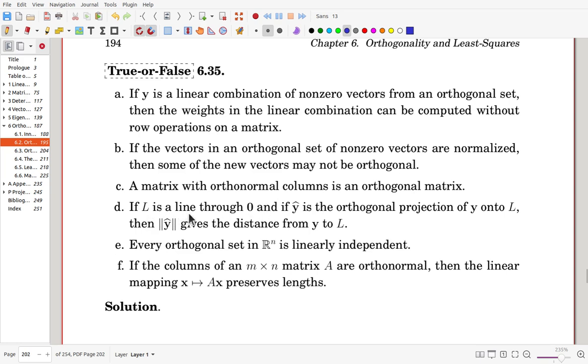If L is a line through zero and y hat is the orthogonal projection of y onto L, then the norm of y hat gives the distance from y to L. It's false, right? Here we may write in this way: y equals projection to L and then the orthogonal component. Then from here, z is same as y minus y hat. So if you measure the norm, then that will be distance. So that is false. Rather than y hat, you have to put here y minus y hat.